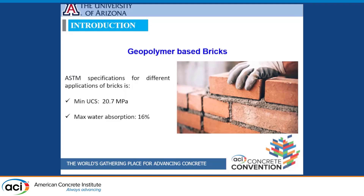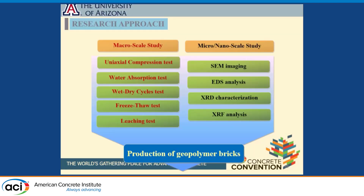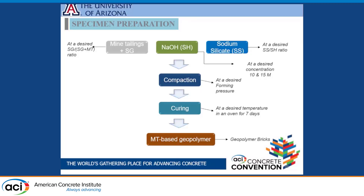To produce bricks with these tailings, ASTM requires a minimum of 0.7 megapascal compressive strength and a maximum water absorption of 16%. We conducted the study at two scales — micro and macro — performing compression tests, water absorption tests, wet and dry cycle tests, freeze-thaw tests, leaching tests, and microstructure analysis. We used mine tailings and slag in different combinations, mixed with alkaline activators at different ratios, compacted to produce bricks, cured in an oven, and then tested.